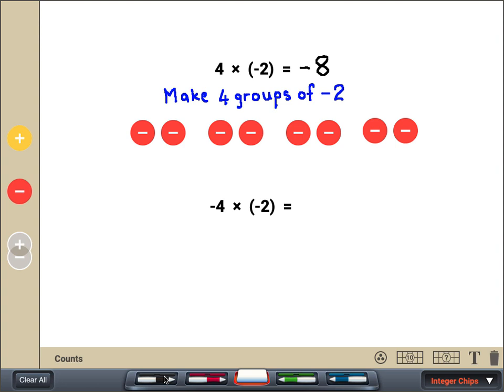Let's now look at a more complex example: negative 4 times negative 2. We can think of the negative sign before the 4 as telling us to remove 4 groups of negative 2. But we don't have any negative chips to remove, so what do we do?